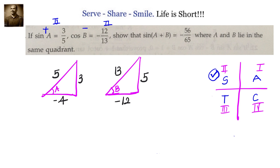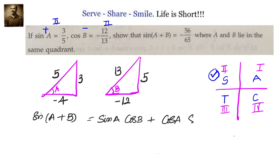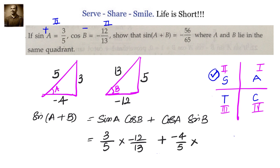Now we can apply the formula: sin(A+B) = sin(A)·cos(B) + cos(A)·sin(B). sin(A) is 3/5, cos(B) is -12/13, cos(A) is -4/5, and sin(B) is 5/13.